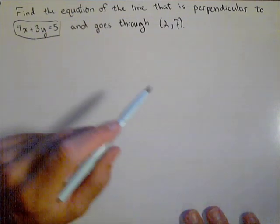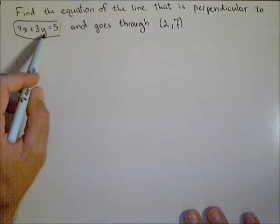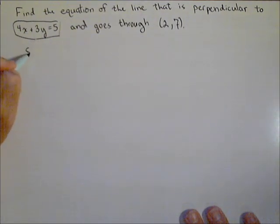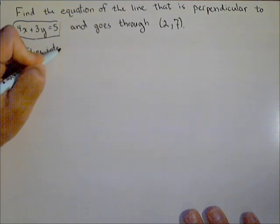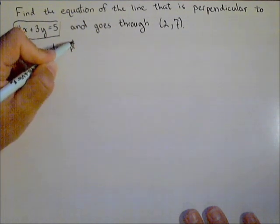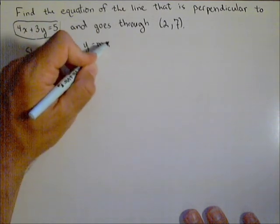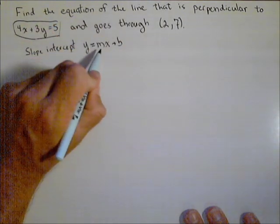There's a few different ways we can find the slope, but an easy one is if we can solve this for y, because then we'll be in slope-intercept form and we can identify the slope really quickly. Recall that slope-intercept form looks like y equals mx plus b. So by having it y equals, we can identify the slope.